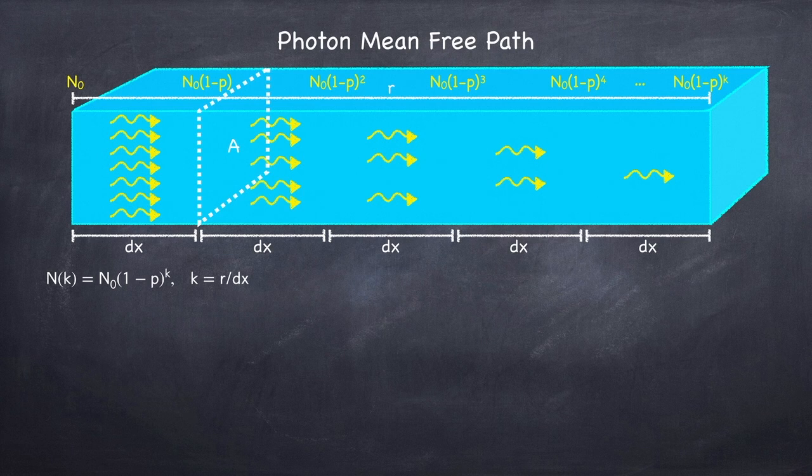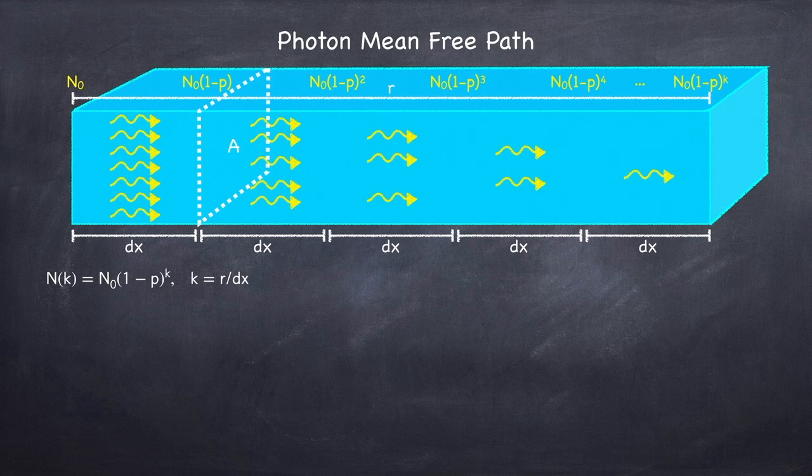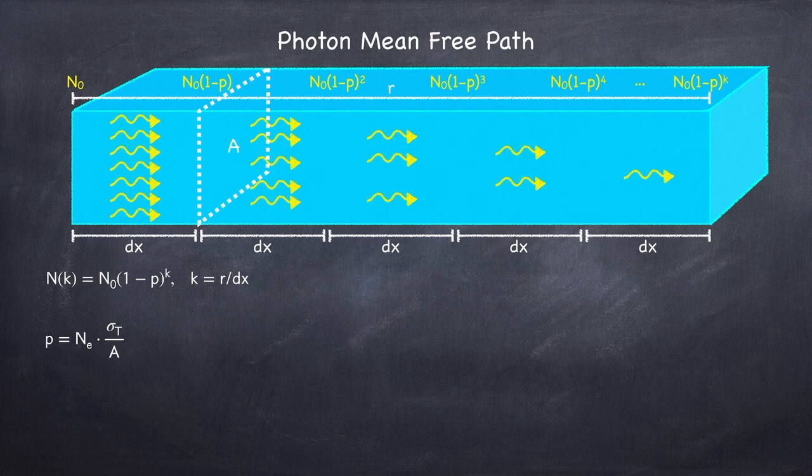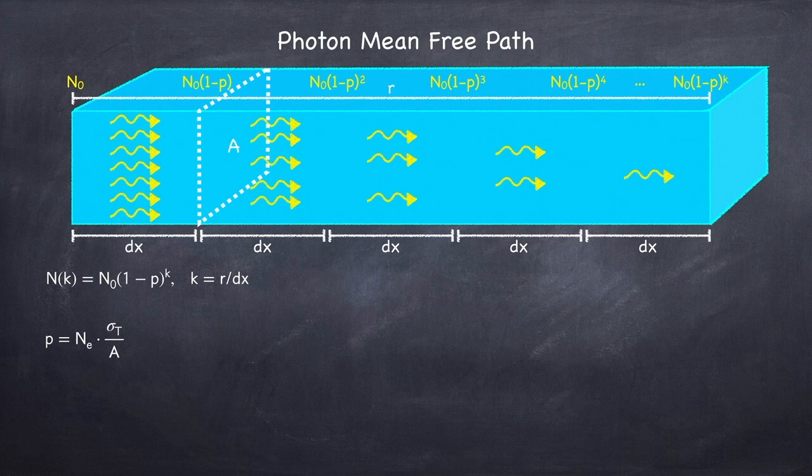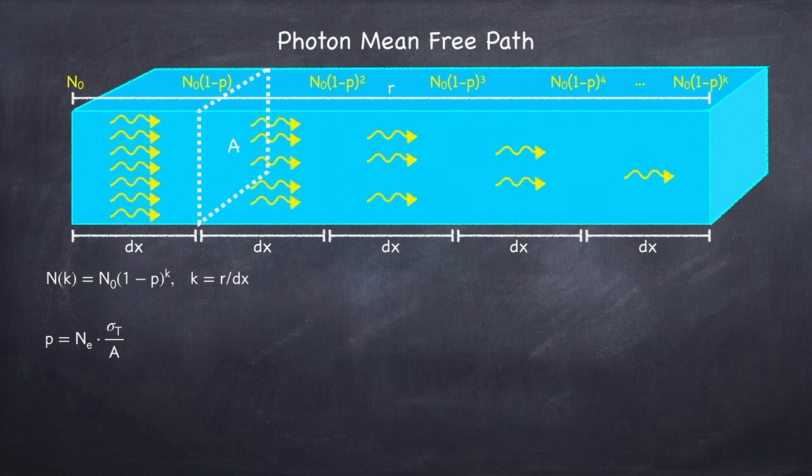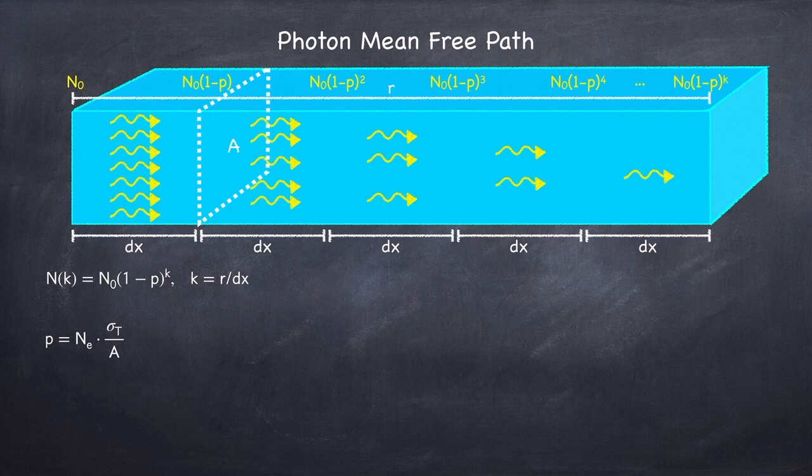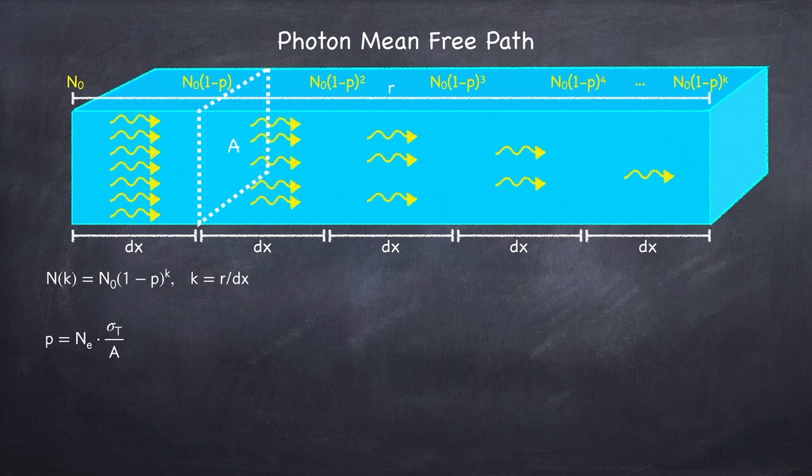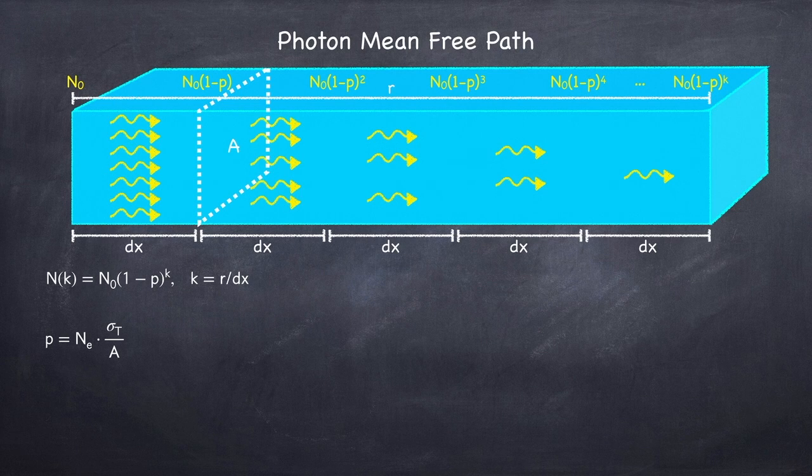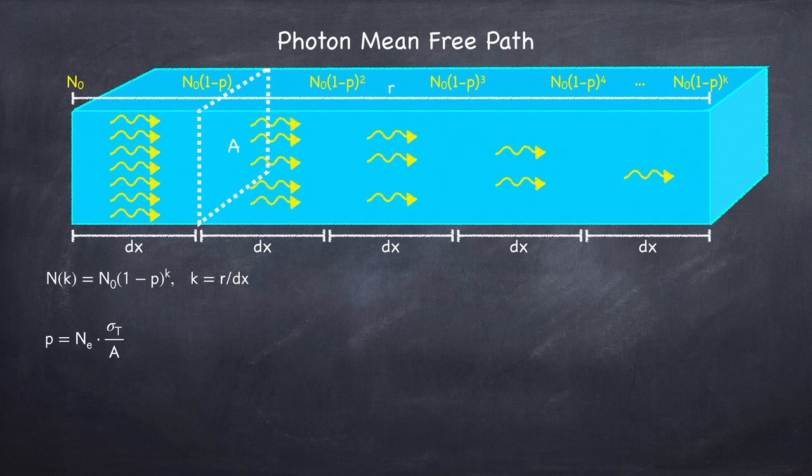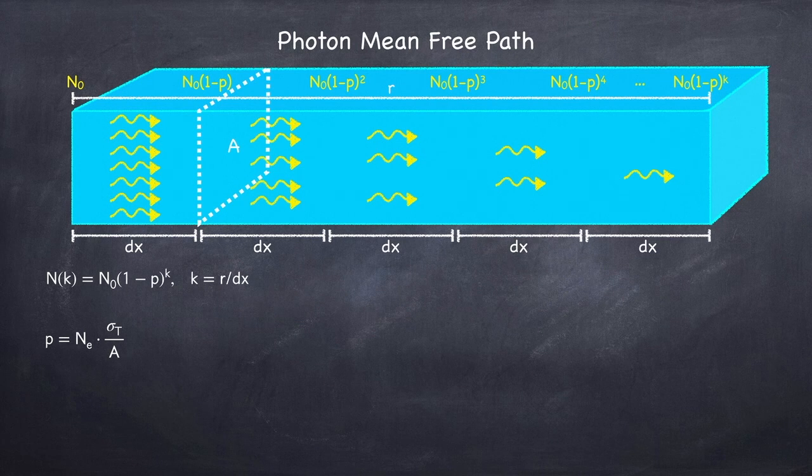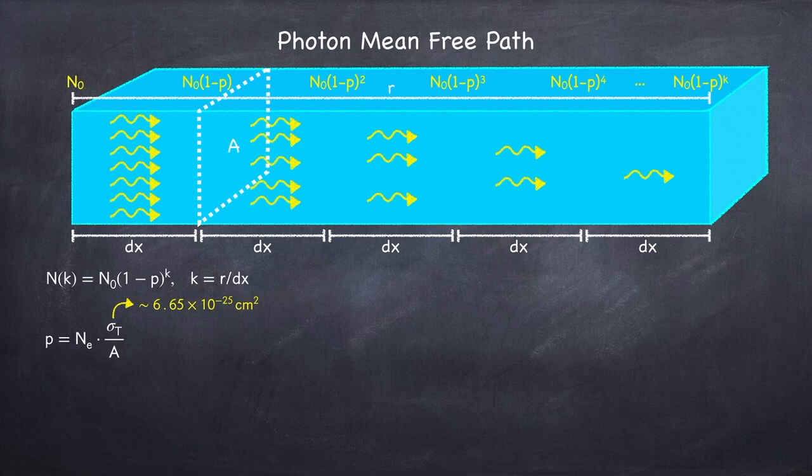Since p is the probability that a photon will scatter off of an electron in one of these steps, that probability is simply going to be the number of electrons in the volume corresponding to this length dx times the cross-sectional area of an electron divided by the cross-sectional area of the volume. Now, the thing is, electrons don't actually have a cross-sectional area, they're point particles. So instead what we're using here is called the Thomson cross-section. This cross-section is a quantum mechanical object, and even though it doesn't actually represent the physical size of an electron, you can think of it as a target centered around an electron that a photon has to hit in order to have a reasonable chance of scattering off of it. I'm not going to derive this cross-section, I'll just tell you that it's about 6.5 times 10 to the minus 25 square centimeters.